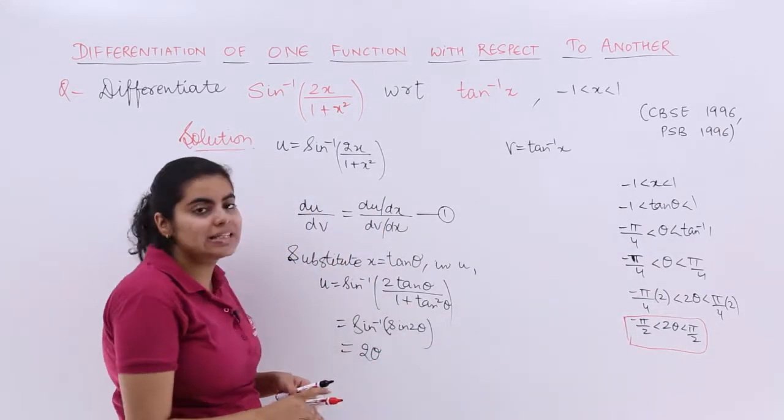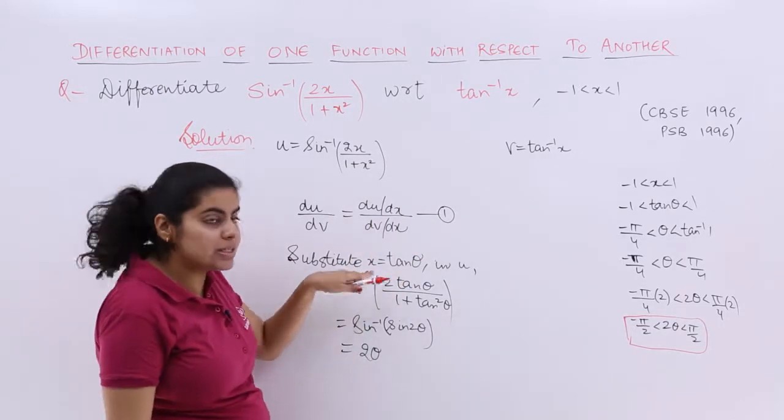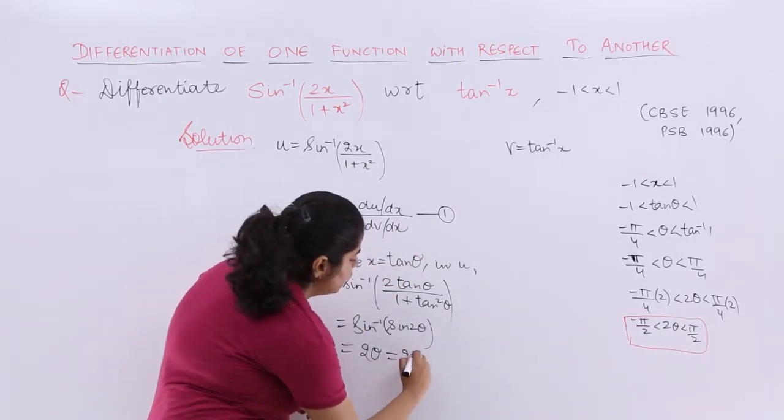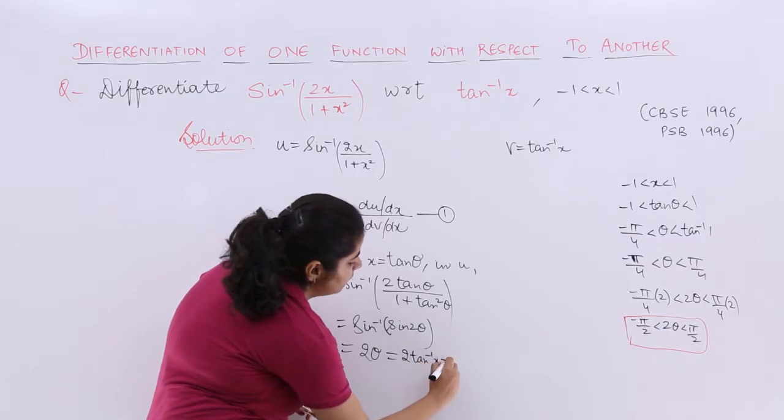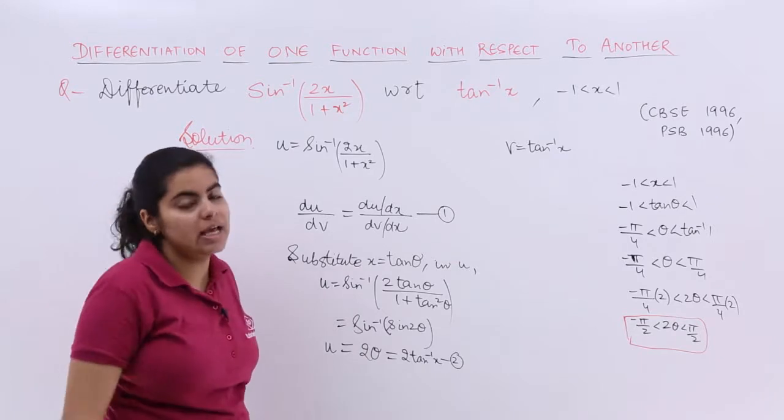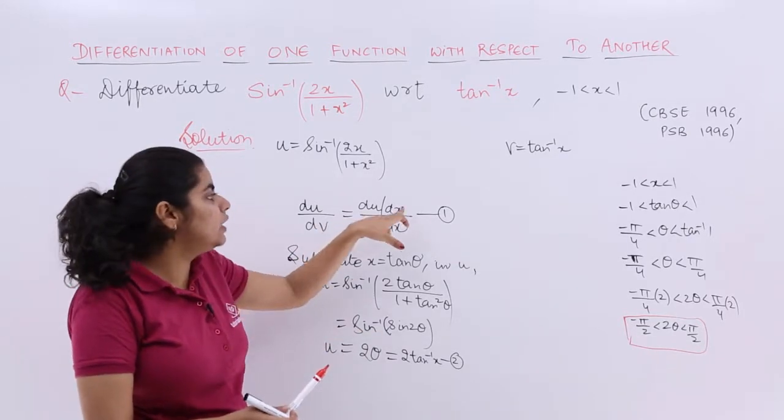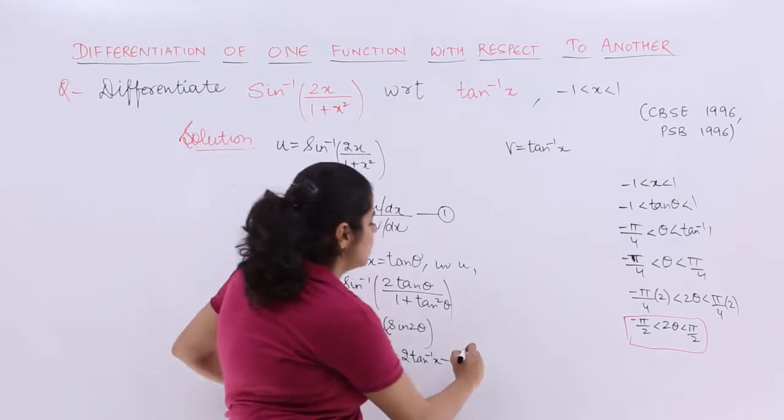Now 2 theta is there. What is theta? Theta is tan inverse x. So it is 2 tan inverse x. That is equation number 2. So basically my u is 2 tan inverse x. But what did we want to find? We wanted to find out du by dx.